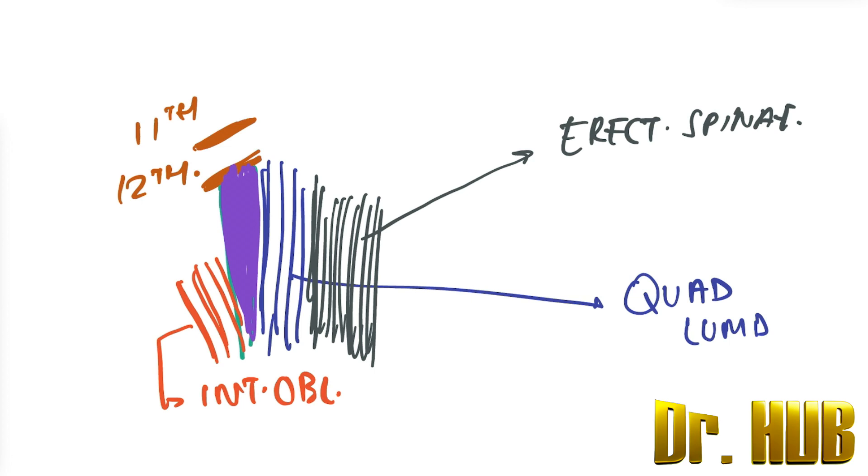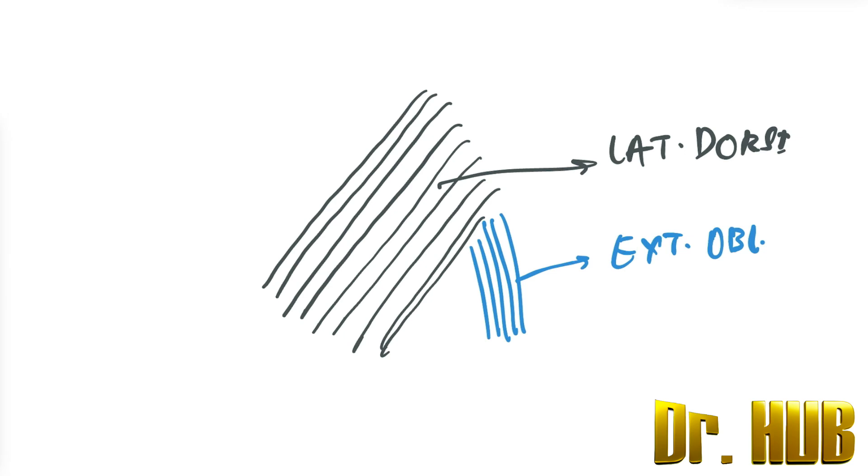On the other hand, let's look at the inferior lumbar triangle. So this is the LD, that is the latissimus dorsi, and on the other hand below there is external oblique, then comes the iliac crest below, and this space is nothing but the inferior lumbar triangle.